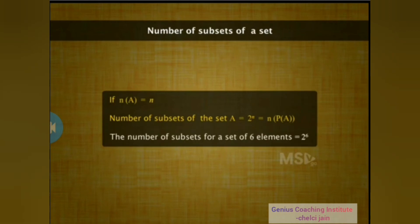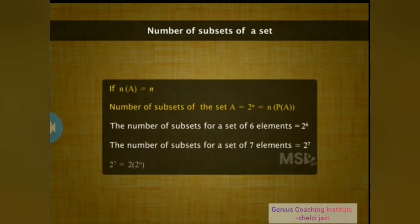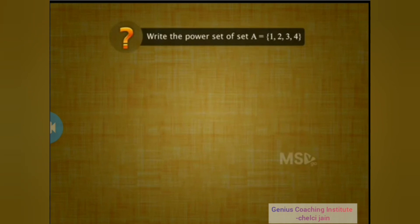So the number of subsets of a set with 6 elements is 2⁶, and the number of subsets of a set with 7 elements is 2⁷. Therefore, the number of subsets for a set of 7 elements is double the number of subsets for a set of 6 elements. Notice that as the total number of subsets doubles each time, the number of elements in a set increases by 1. Let's write the power set of set A with elements {1, 2, 3, 4}.